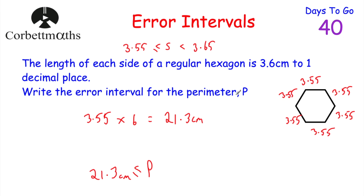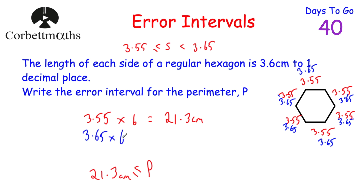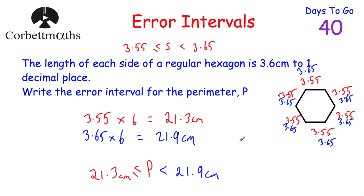Now let's consider what the perimeter could go up to but not include. The length of each side could go up to but not include 3.65 centimetres. So taking 3.65 and multiplying by 6 gives us 21.9 centimetres. So the perimeter could go up to but not include 21.9 centimetres. The error interval for the perimeter P is: P is greater than or equal to 21.3 centimetres, but less than 21.9 centimetres.